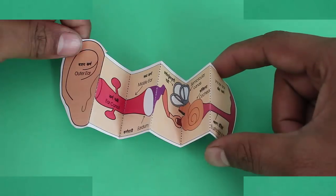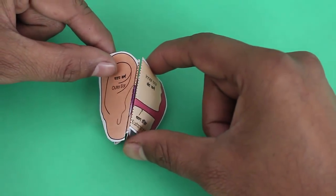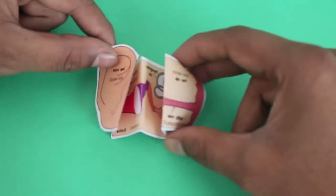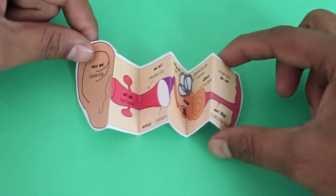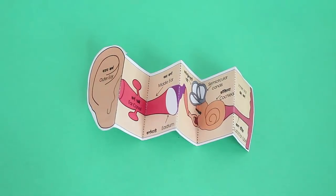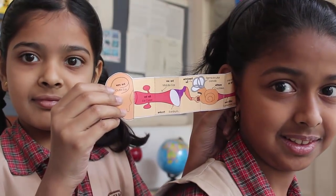Inside the cochlea there are thousands of tiny hair cells which receive the sound, create electrical impulses and pass them on to the brain. That's how we hear the sound.